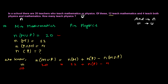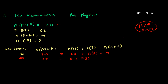So: 20 = 12 + n(P) − 4, which gives 20 = 8 + n(P). Therefore n(P) = 20 − 8 = 12. So the total number of teachers teaching physics is 12.